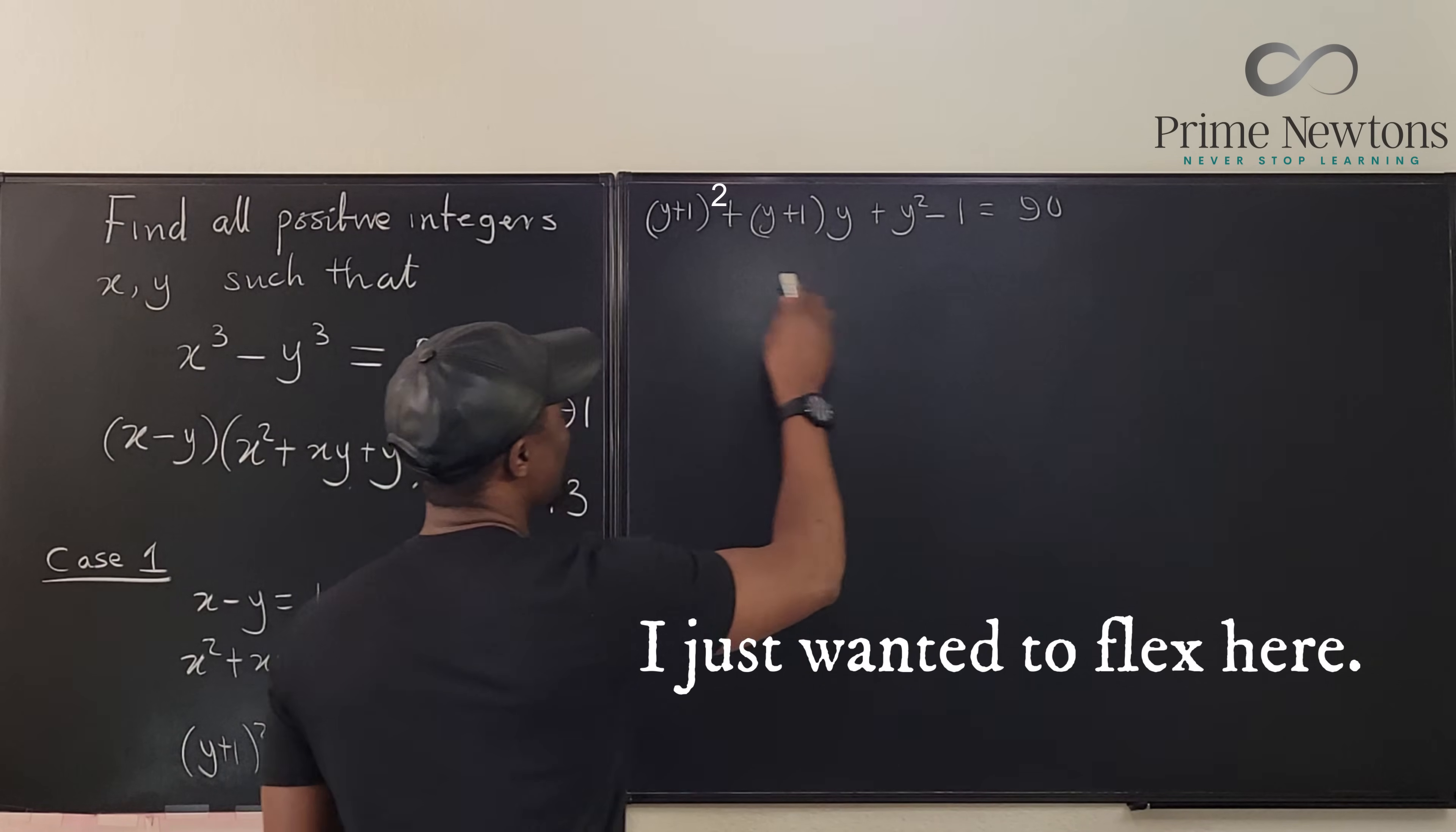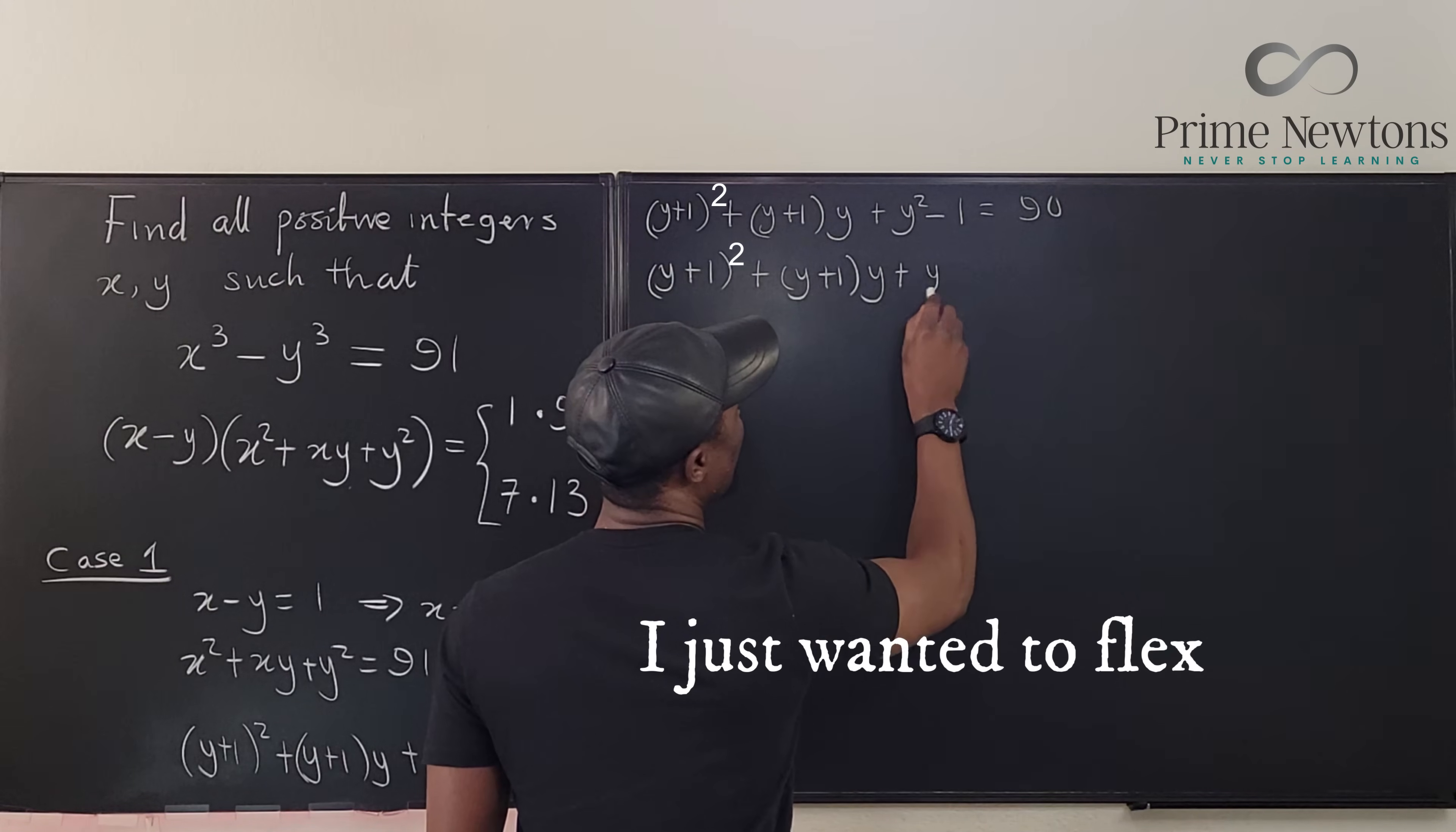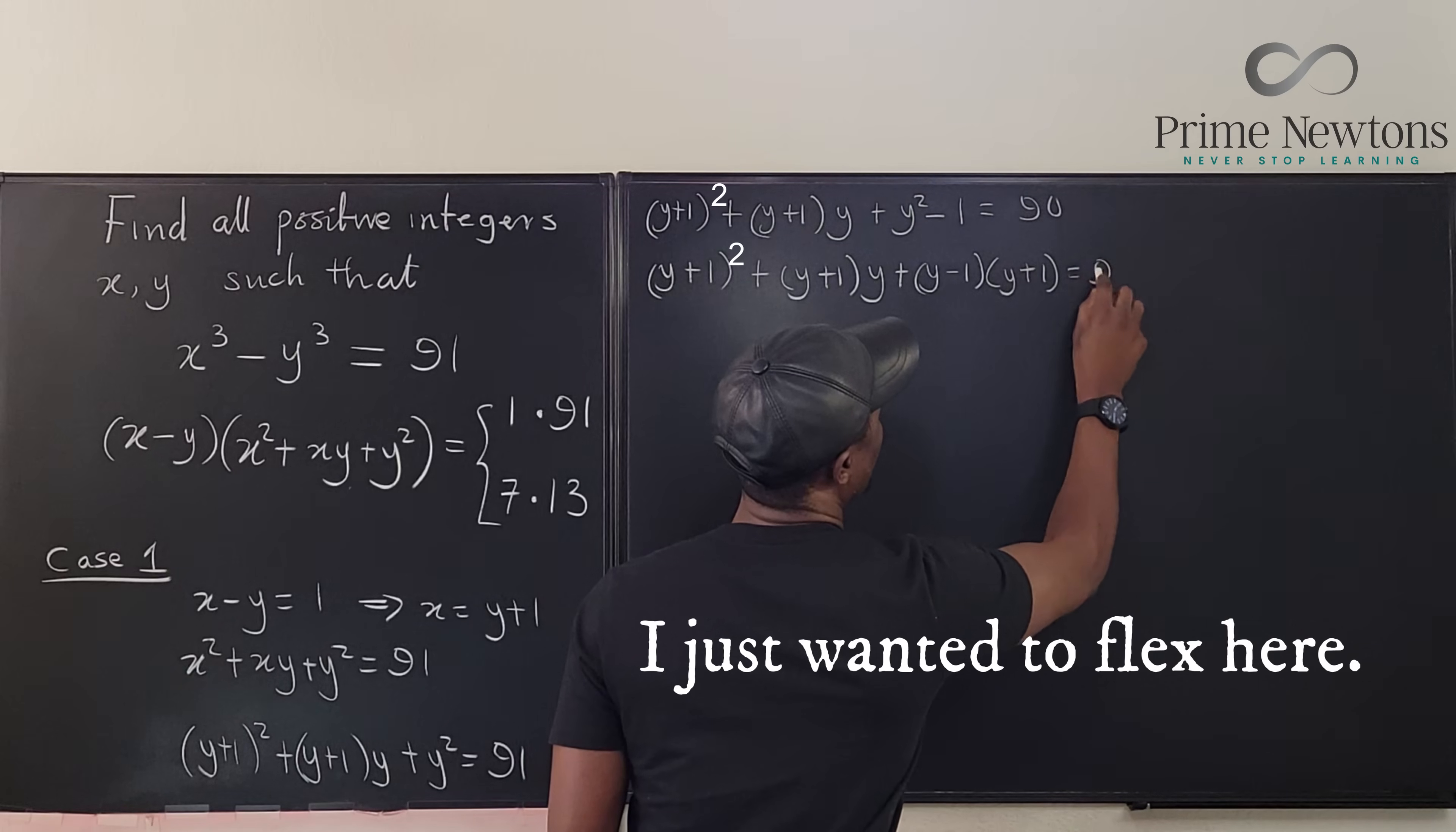So I have y plus 1 plus y plus 1 times y plus, this is now going to be, y minus 1 times y plus 1 equals 90.